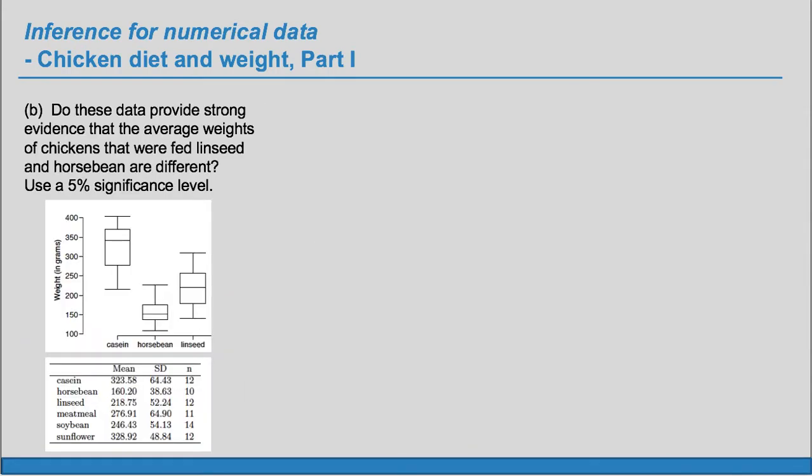Okay, so now part B. Do these data provide strong evidence that the average weights of chickens that were fed linseed and horse bean are different? Use a 5% significance level. So again, we are just going to concentrate on these two and we are going to compare these two groups to each other.